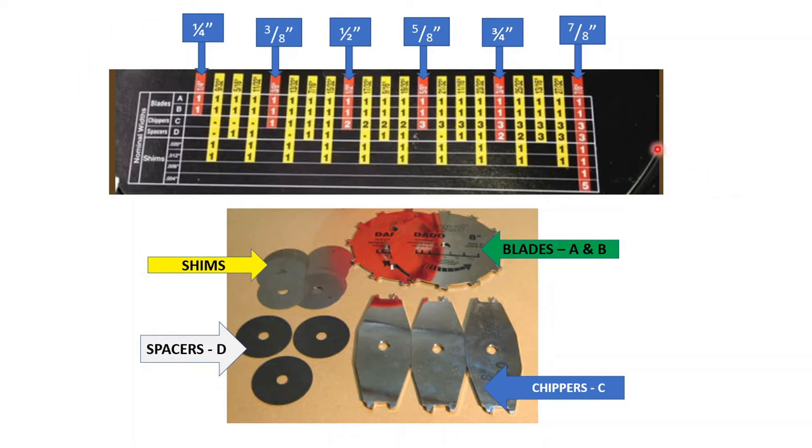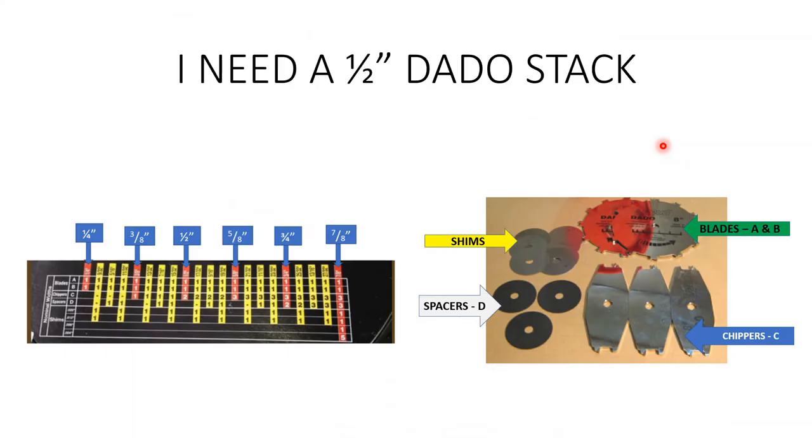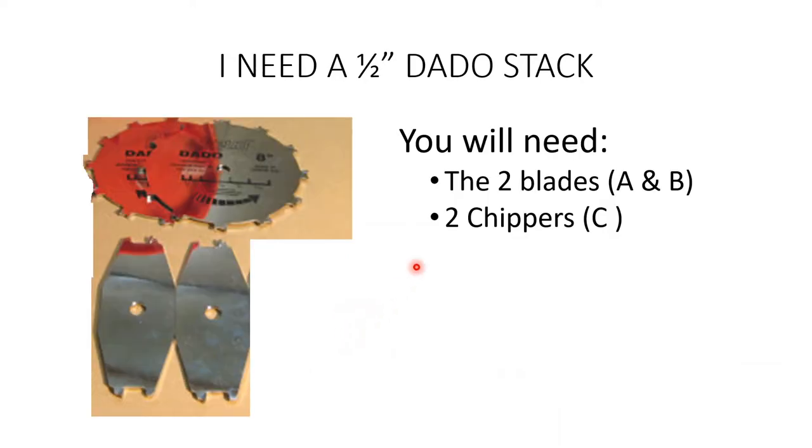Now that I went over how to look at the chart to build your blade, let's try this on your own. So in this case, I'm going to need a 1/2 inch thick dado blade. Take a moment and think for yourself, what components will you need, and how many of these components will you need? I'm going to pause for about 5 seconds so that you can figure that out. Okay, so again, I'm going to look at this chart over here at the 1/2 inch. And I'm going to need 2 blades and 2 chippers.